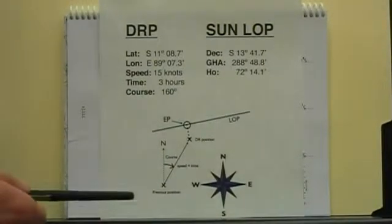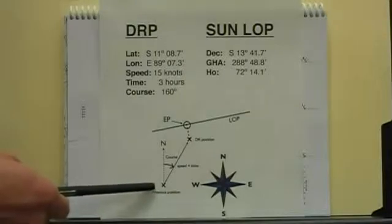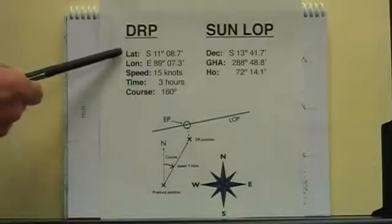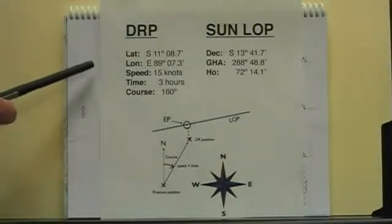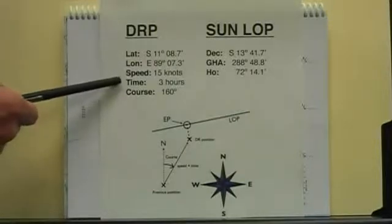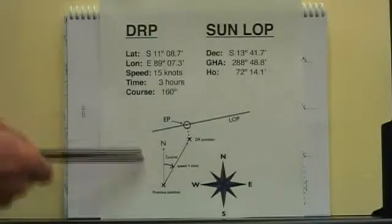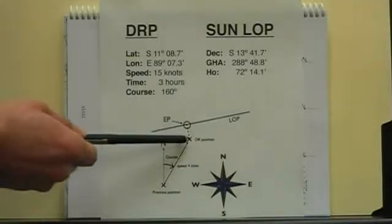From a known previous position with coordinates of latitude and longitude, using the average speed, the time interval, and course made good, it will first calculate the new dead reckoning position.